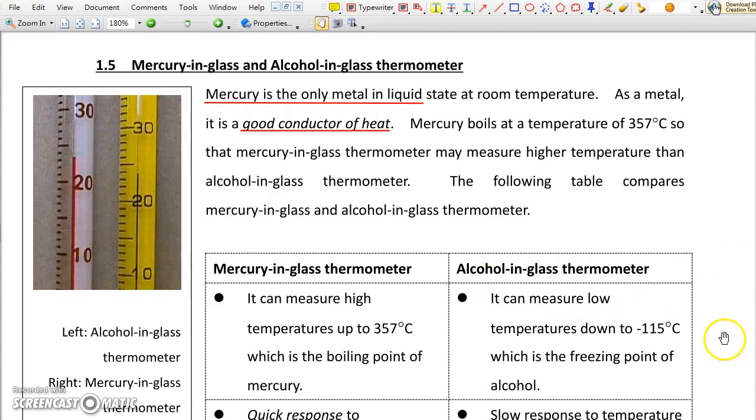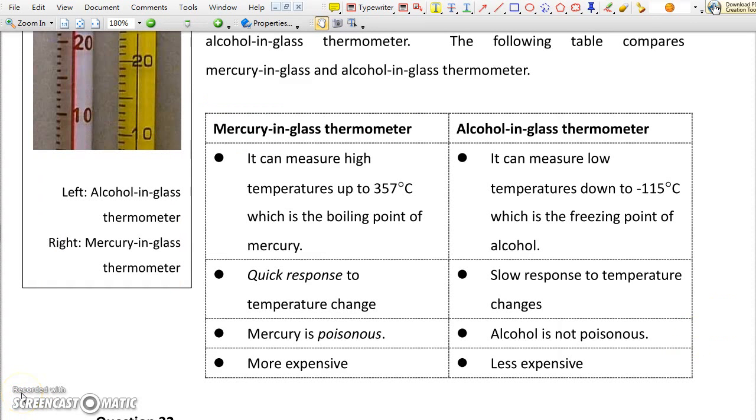On the other hand, alcohol can measure much lower temperature than mercury in glass thermometer. The another advantage of using mercury in glass thermometer over alcohol in glass thermometer is the quick response to temperature change. However, mercury is poisonous and mercury in glass thermometer is more expensive than the alcohol one.